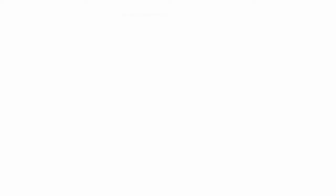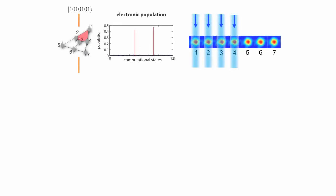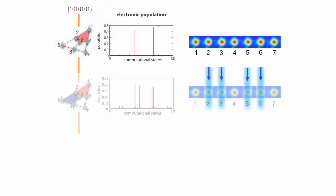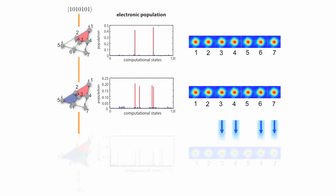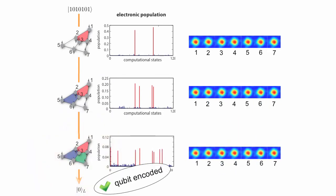The encoding of the logical qubit in the seven physical qubits was the most challenging part of the experiment. We achieved this encoding in three steps, where in each step we created entanglement between groups of four qubits belonging to each plaquette of the logical qubit.